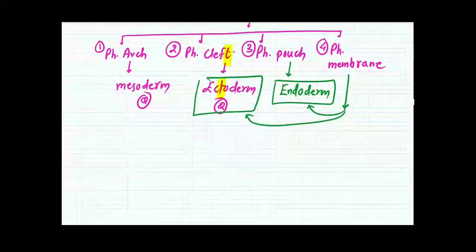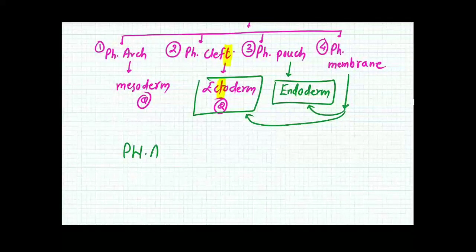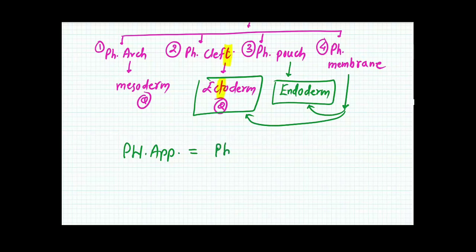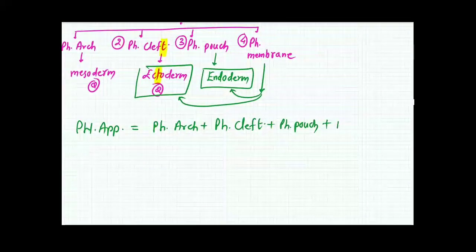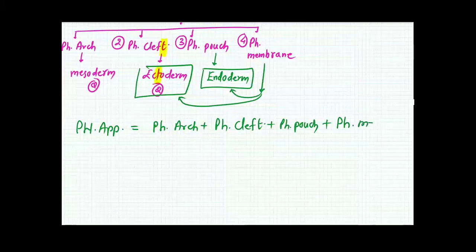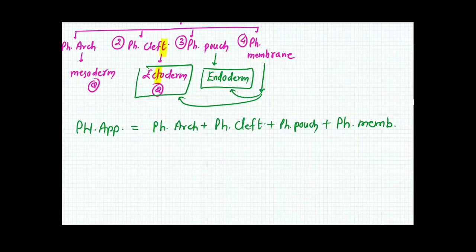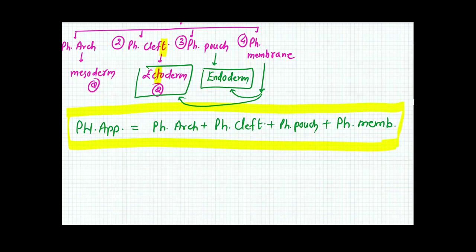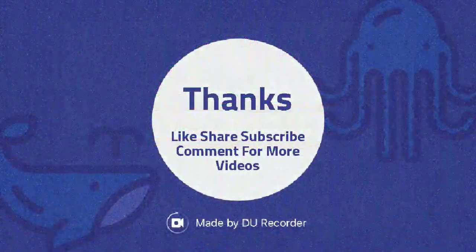You can write down what is the pharyngeal apparatus. Pharyngeal apparatus is equal to pharyngeal arch plus pharyngeal cleft plus pharyngeal pouch. And one more thing, if you want to remember, then you can add the pharyngeal membrane. So this is your mathematical box for the pharyngeal apparatus. The more detail we will see in the later videos.